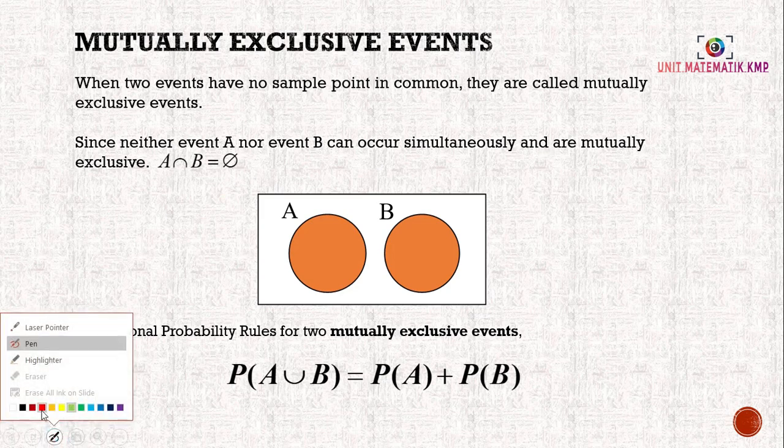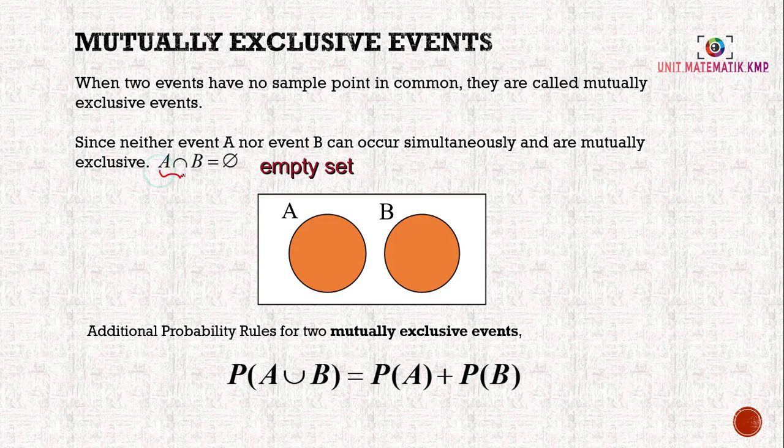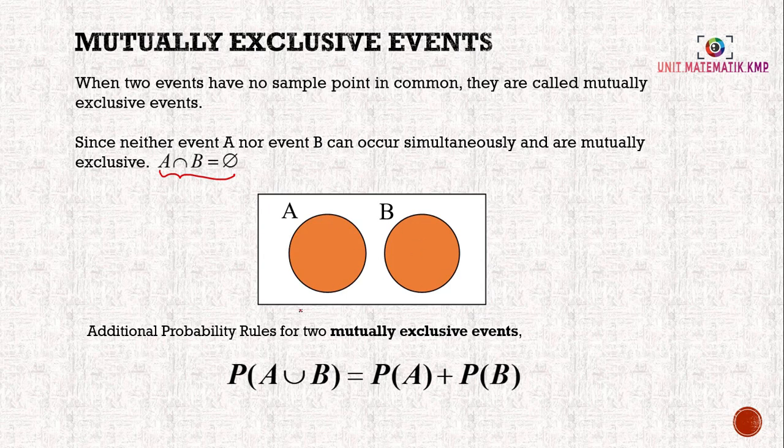There is no intersection. When we draw the Venn diagram, they will be separate like this. The additional probability rule for two mutually exclusive events is P(A ∪ B) = P(A) + P(B).